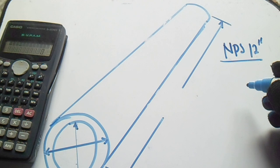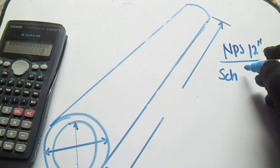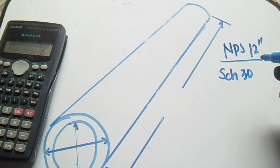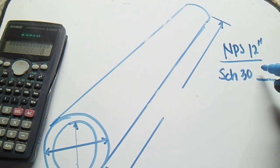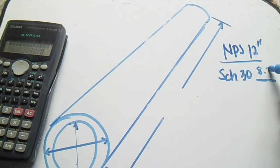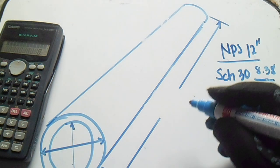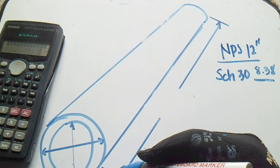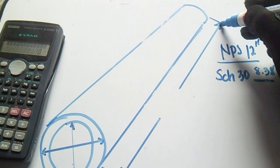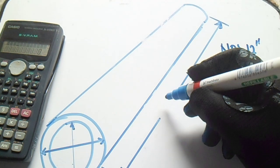We have a schedule, let's say schedule 30. In millimeters, the schedule 30 thickness of pipe is 8.38. To find the weight of pipe, we must know the length of pipe.